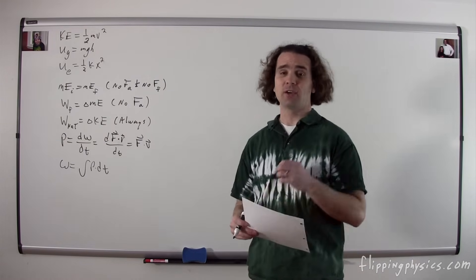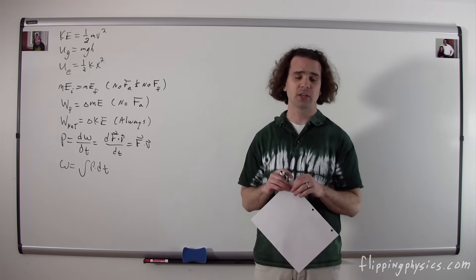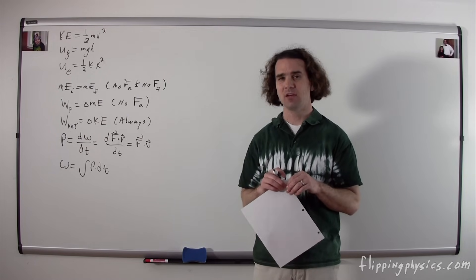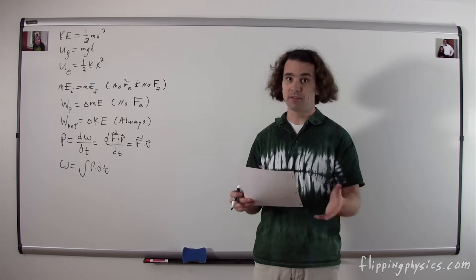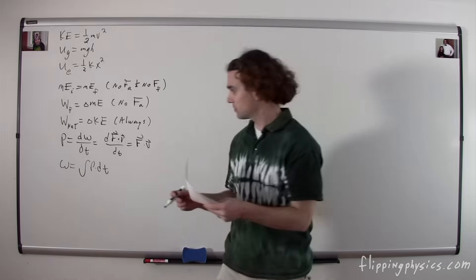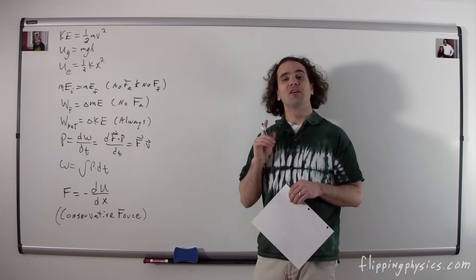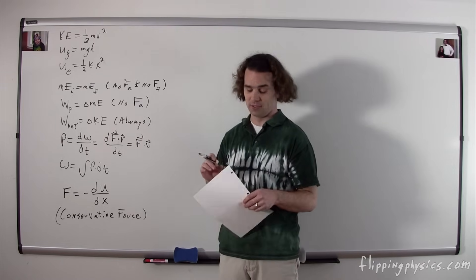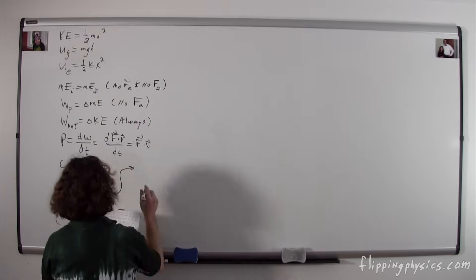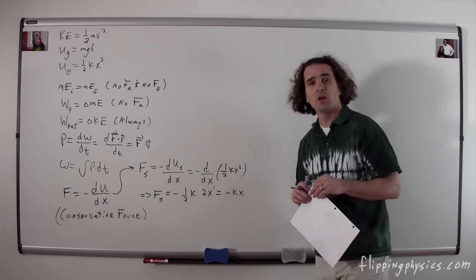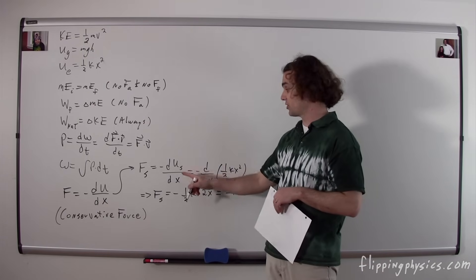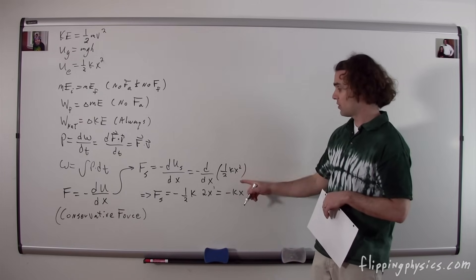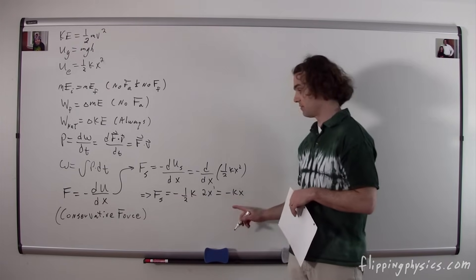There is an equation that is always true for a conservative force. A non-conservative force would be friction; a conservative force is one for which the path does not matter — the work done is independent of the path. For a conservative force, that force equals the negative derivative of the potential energy associated with that force with respect to position. This equation is not on your equation sheet but comes up often, so memorize it. Example: the force of a spring equals negative d/dx of (one-half kx squared), which gives negative kx — consistent with Hooke's law.